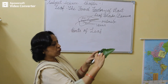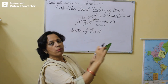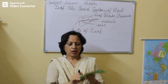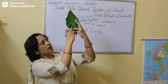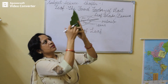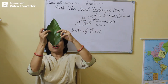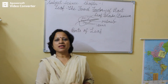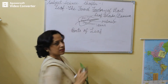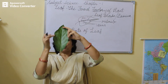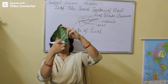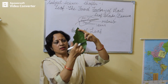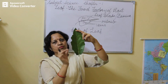Aap iske jo beech ki jo vein hoti hai, usko hum bolte hain midrib. Beech ki vein ko midrib bolte hain. Aur isi midrib se alag-alag branches nikali hain. Isse hum bolte hain veins. Yeh veins jo food aur water hota hai, isko different parts ko supply karti hain. Is vein ke dwara food aur water in doosare parts ko diya jata hai.